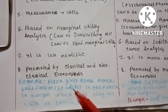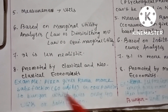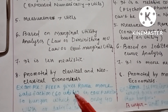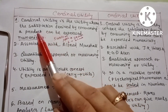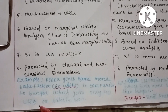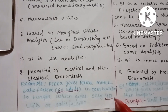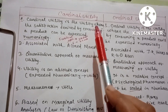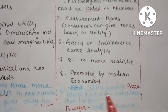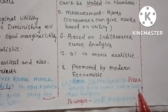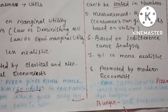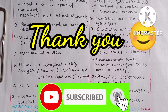As an example of cardinal utility analysis: suppose pizza gives Rama more satisfaction — he is getting 60 utils from pizza compared to burger which gives only 40 utils. Since satisfaction is measured numerically, this is cardinal utility. For ordinal utility, Rama's first preference is pizza, which gives more satisfaction than burger, and his second preference is burger — preferences are ranked rather than measured in numbers.